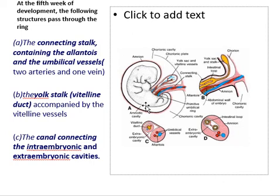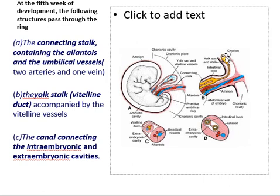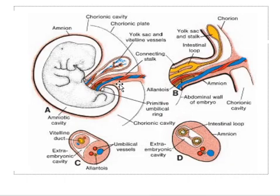So within the primitive umbilical ring we have: the connecting stalk containing the allantois and umbilical vessels; the vitelline duct and vessels; and the canal connecting the intraembryonic and extraembryonic cavities. Within the figure you can see all these structures — vitelline duct and vessels, umbilical vessels, yolk sac, and the canal connecting the intraembryonic and extraembryonic cavities.